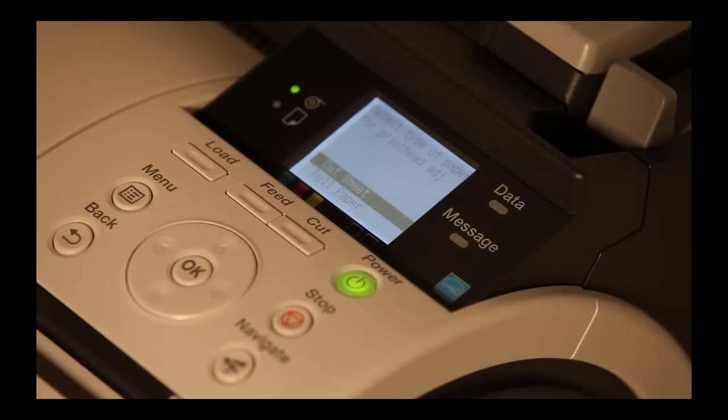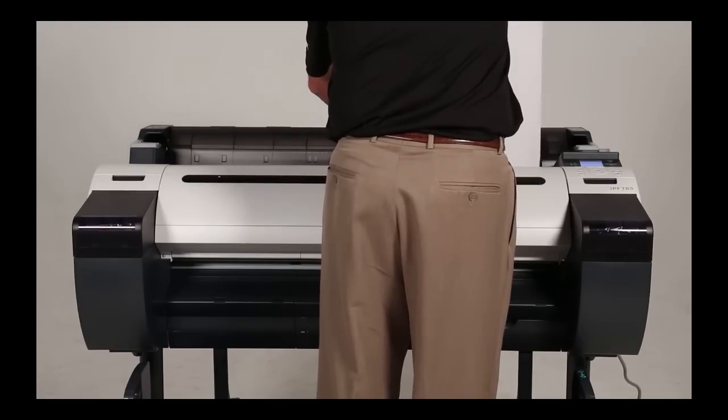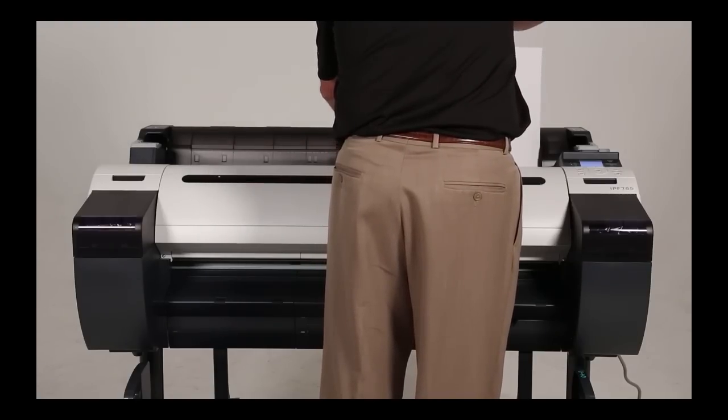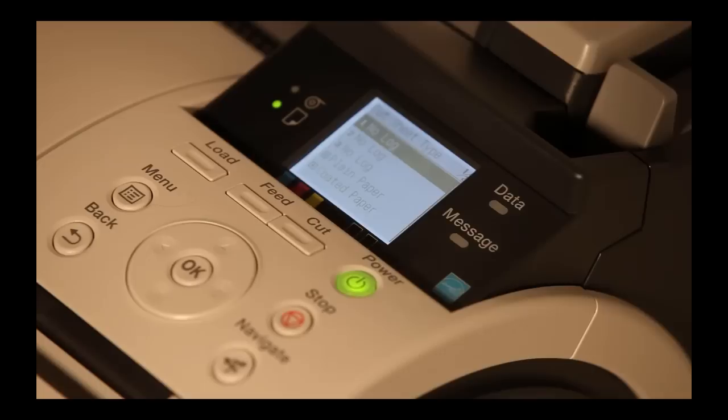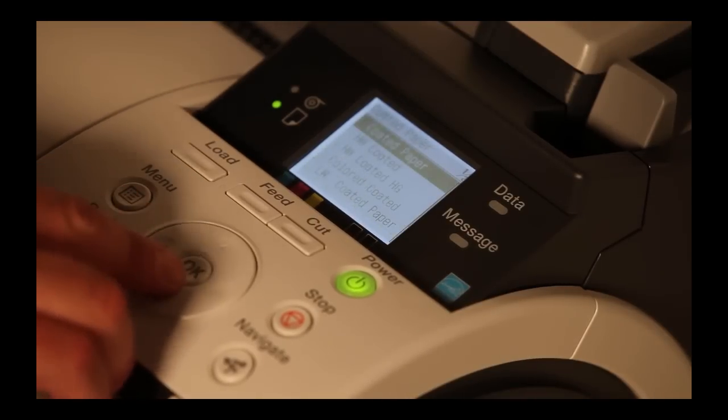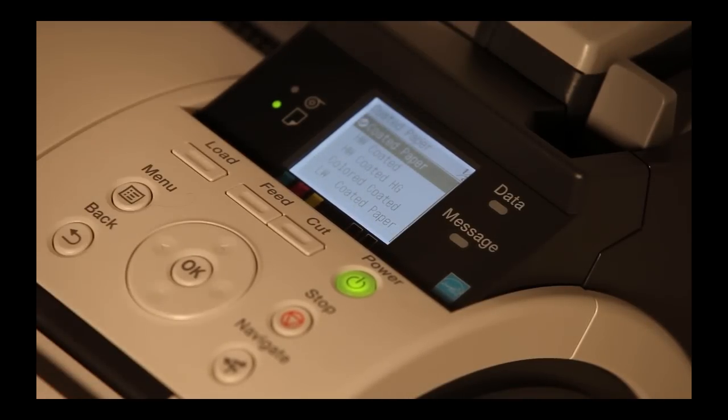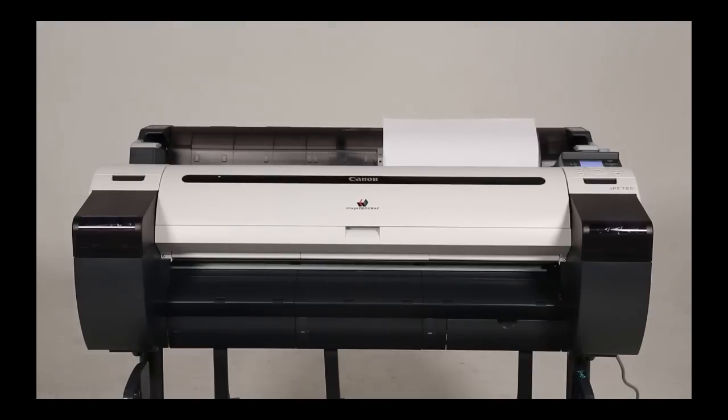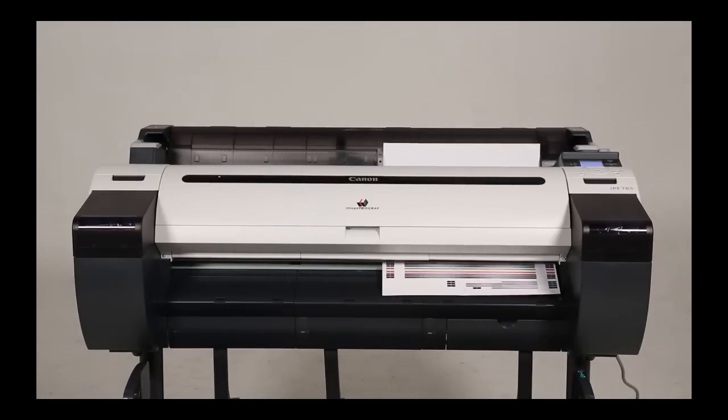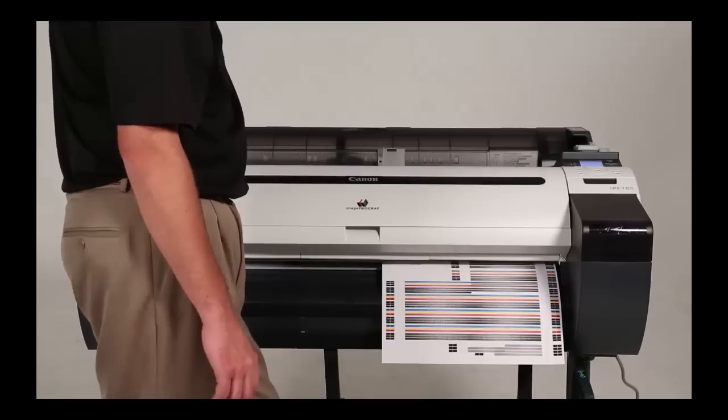When prompted, select cut sheet for the type of paper to be used for the print head adjustment. Next, insert the provided calibration paper with the print side up, aligning it to the right. Select coated paper for the cut sheet paper type for the print head alignment.